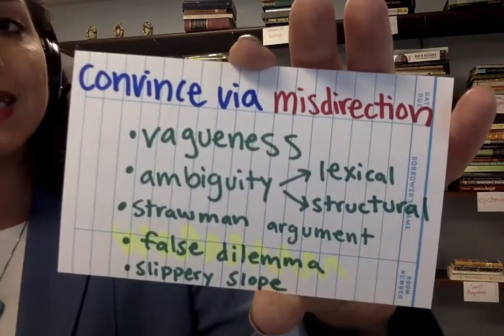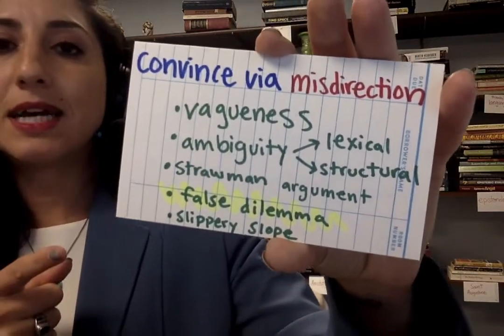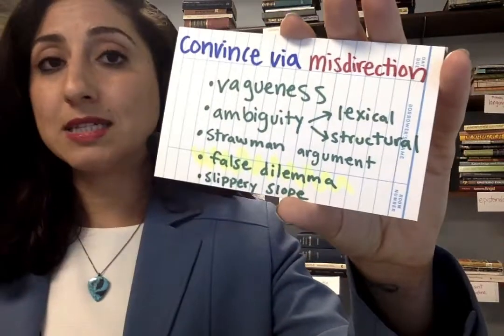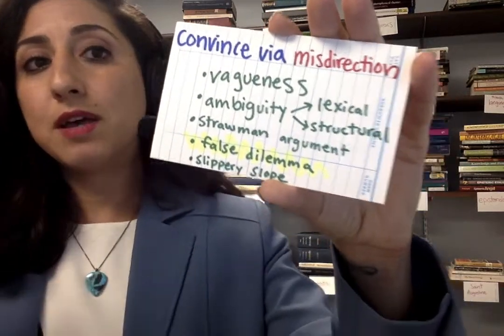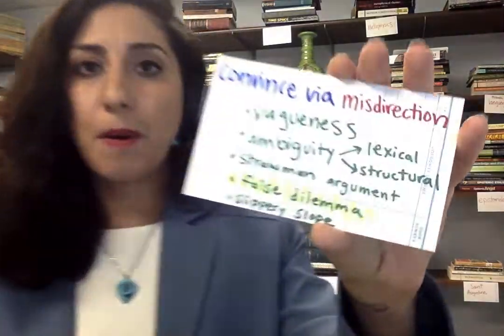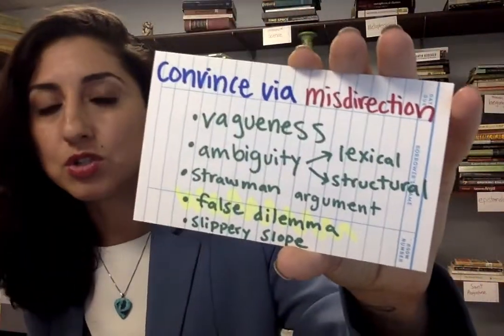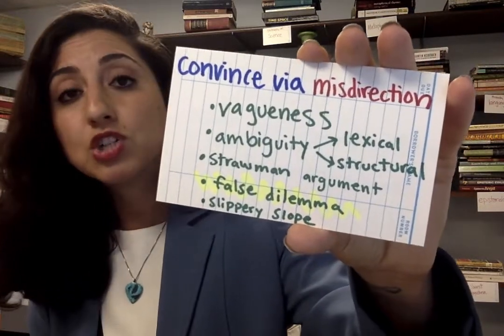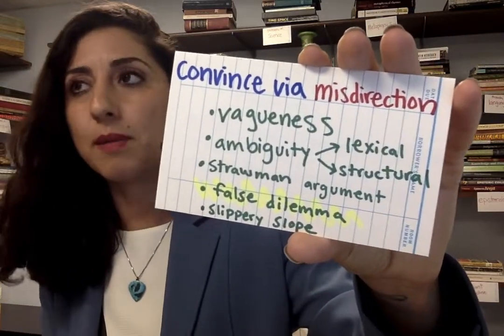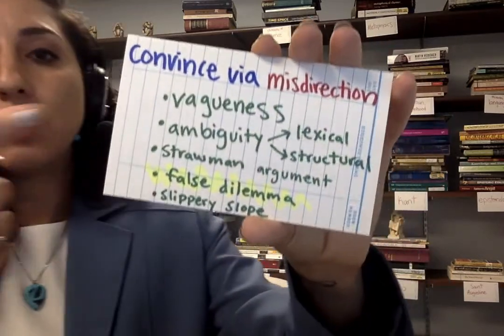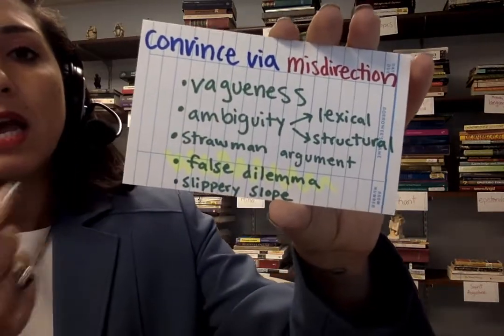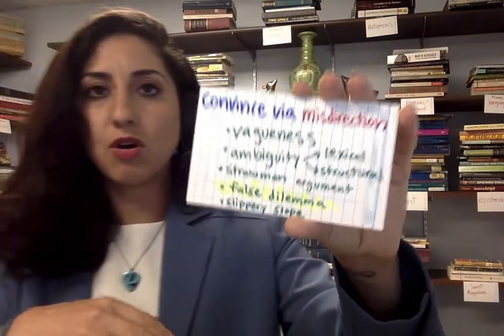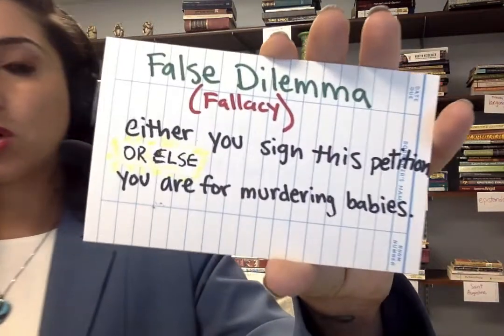Here's a different kind of logical fallacy — the kind that convinces an audience of a conclusion using premises via misdirection. This takes advantage of the fact that the human mind is easily distractible. By using ambiguous or vague words, you can get someone to agree with your conclusion using premises designed to misdirect. Vagueness, ambiguity, the straw man, and slippery slope are all fallacies in this category.